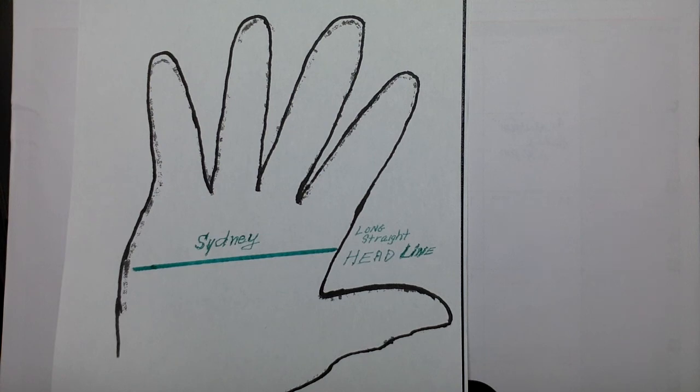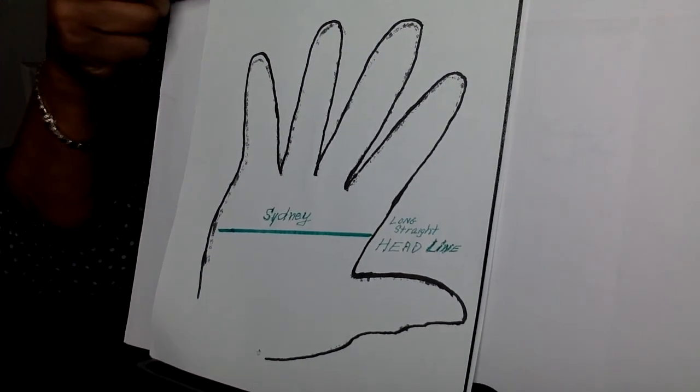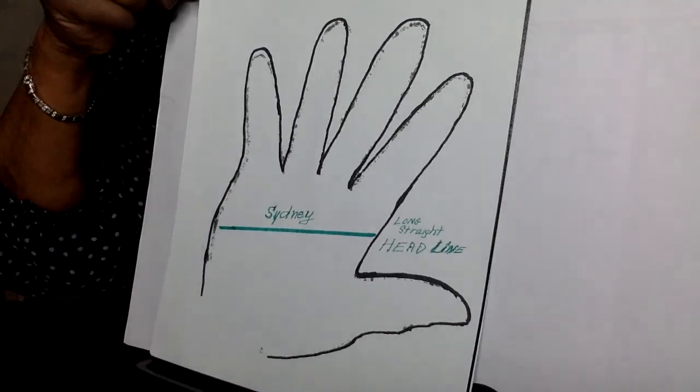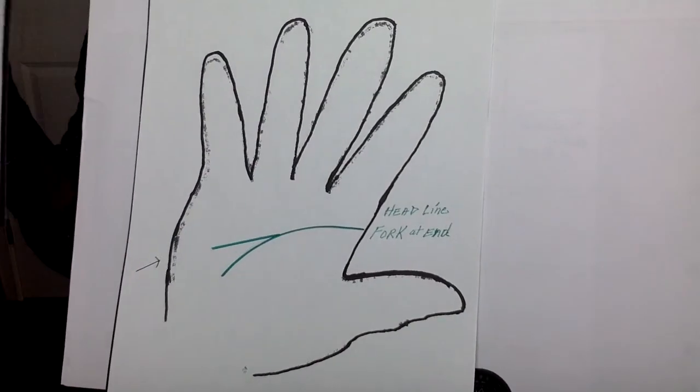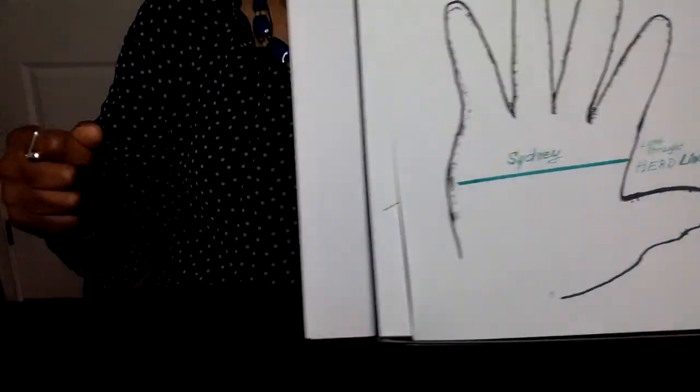And that's how they are. So you don't feel much emotion with them. They're very serious. They read a lot. They're very intelligent. And that is the person who has that Sydney line. There's more to say about the headline, but we will leave it to the next one. Our next lesson.